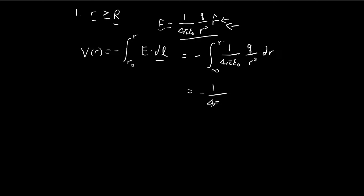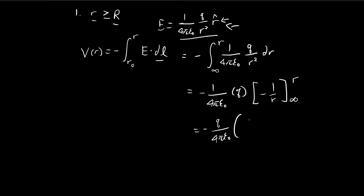Integrating this is fairly easy. We get negative 1 over r evaluated from infinity to r, which gives us negative 1 over r minus 0, since 1 over infinity equals 0. This answer is expected because we can treat the sphere as a point charge — so this is the same as the potential for a point charge when considering the potential outside the sphere.